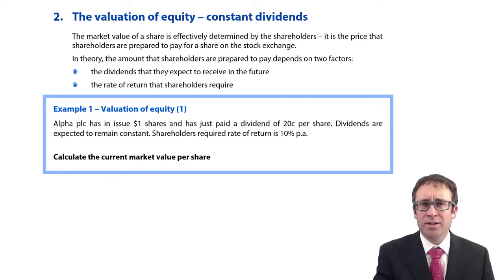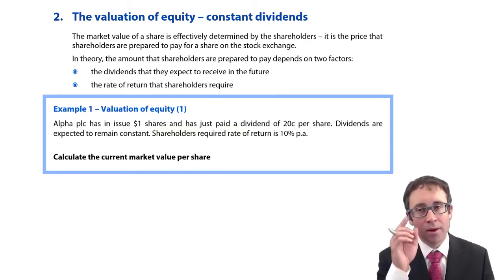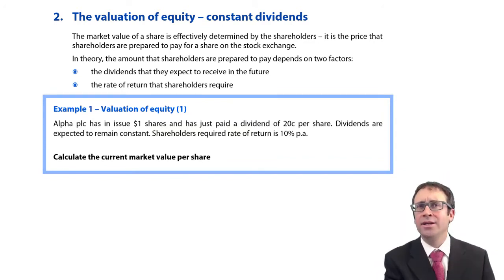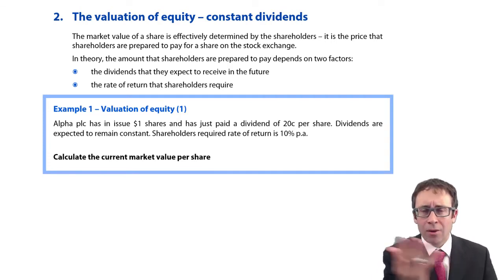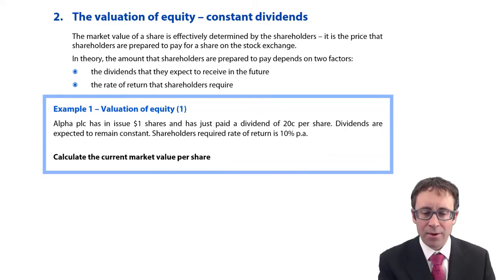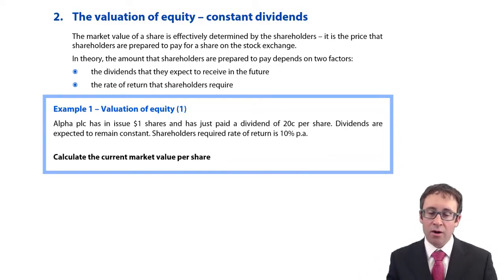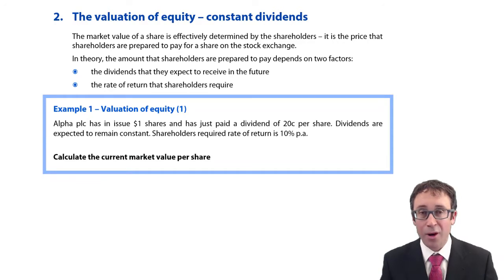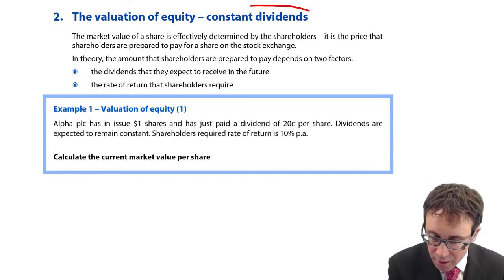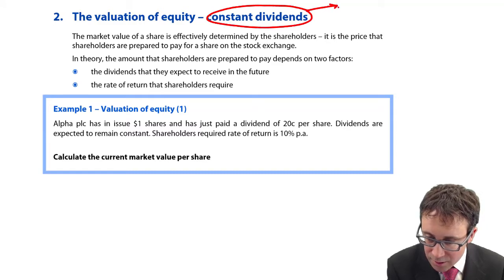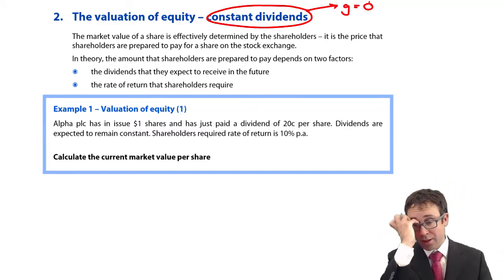These first few pages of the notes, there's nothing new that you haven't seen before in F1, as part of our weighted average cost of capital calculations. Let's go through and play around with valuing our equity. The first scenario we are looking at is whereby there are constant dividends. So, if there are constant dividends, then the growth in our dividends is zero.